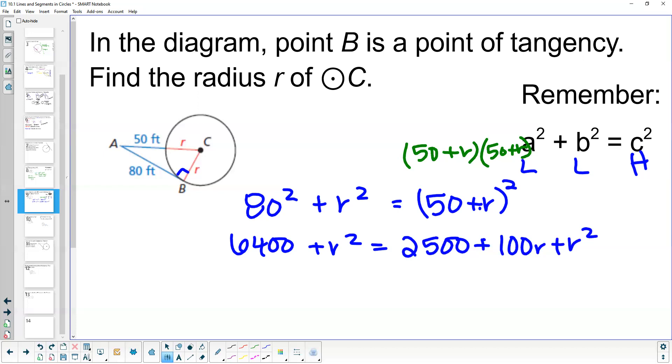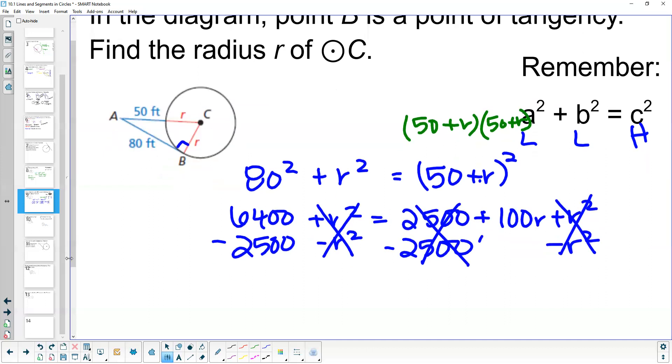I'm going to move all the r terms to one side and all the constants to the other. Subtracting 2,500 from both sides and subtracting r² from both sides, the r² terms cancel out. This simplifies to 6,400 minus 2,500, which is 3,900, equals 100r.